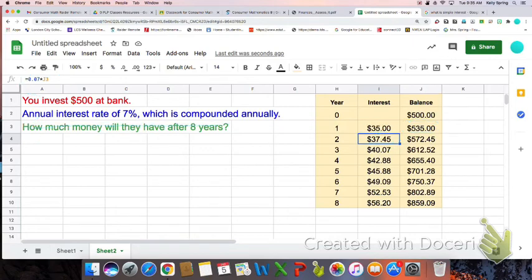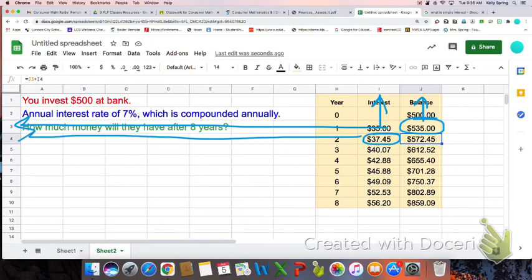That's correct. And then I can look here at this cell. This is taking my previous year's balance, which is J3, and adding my interest, which is I4. J3 plus I4. So that is correct as well.